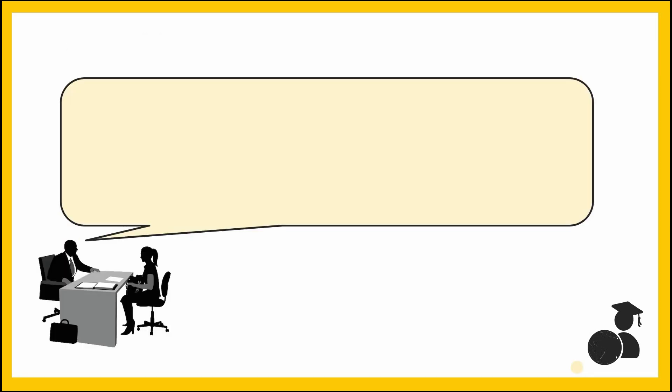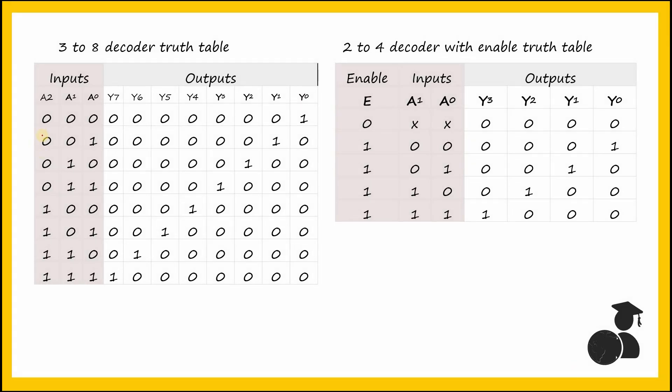Let's move on to the last question: the implementation of larger decoder using smaller decoder, particularly implementing a 3-to-8 decoder from 2-to-4 decoders. These are the truth table for the 3-to-8 decoder and the 2-to-4 decoder with the enable that we saw in the previous question. We will need to generate a 3-to-8 decoder with 8 outputs from a 2-to-4 decoder with only 4 outputs, you will need two 2-to-4 decoders.